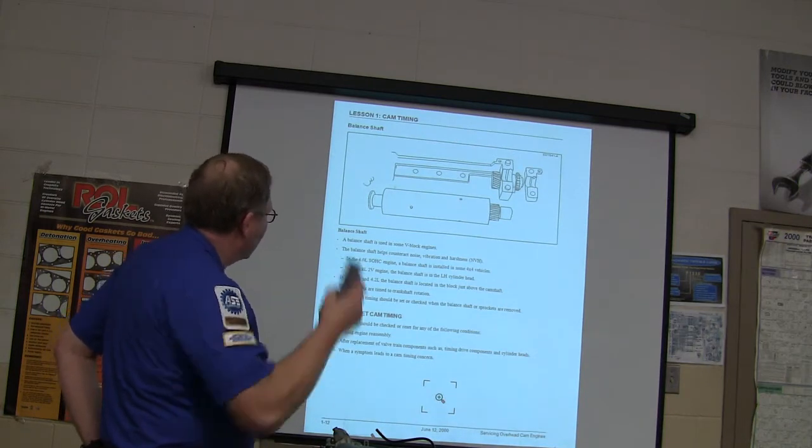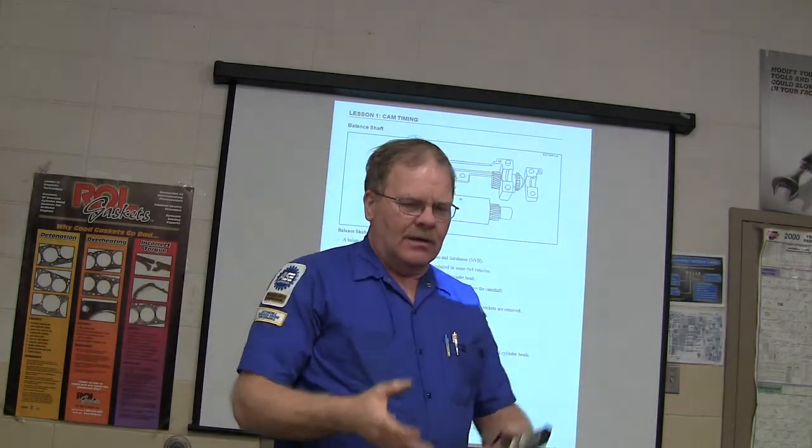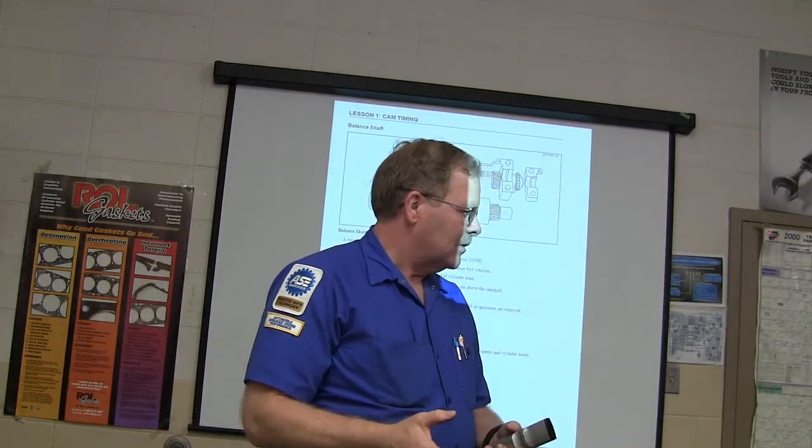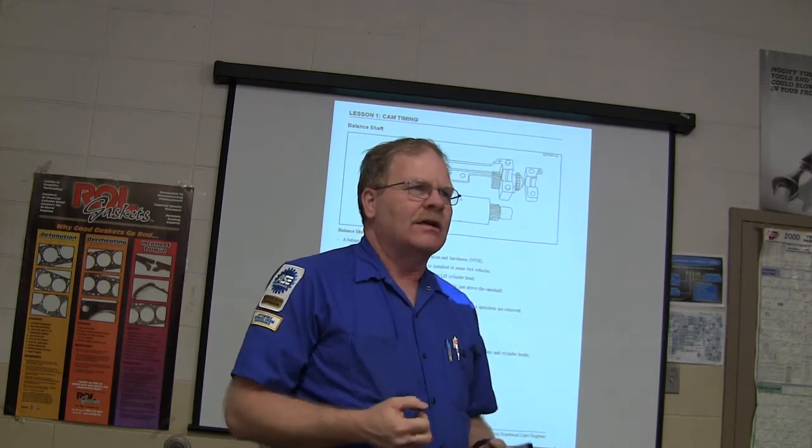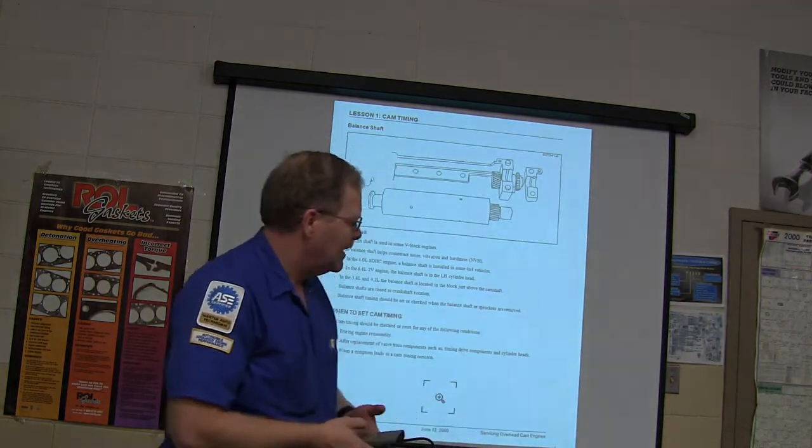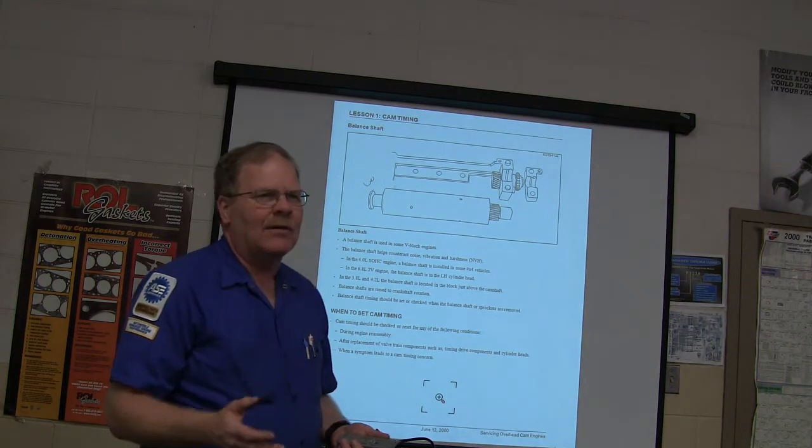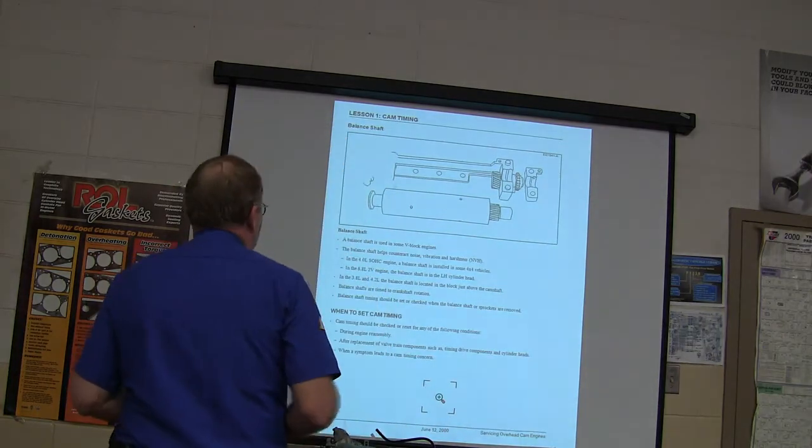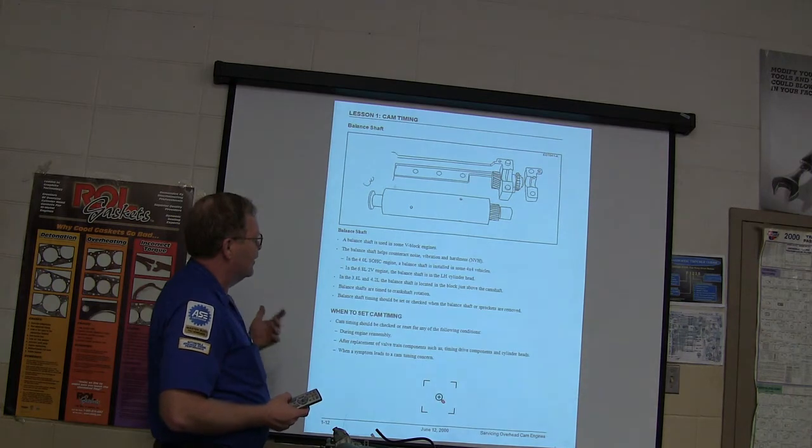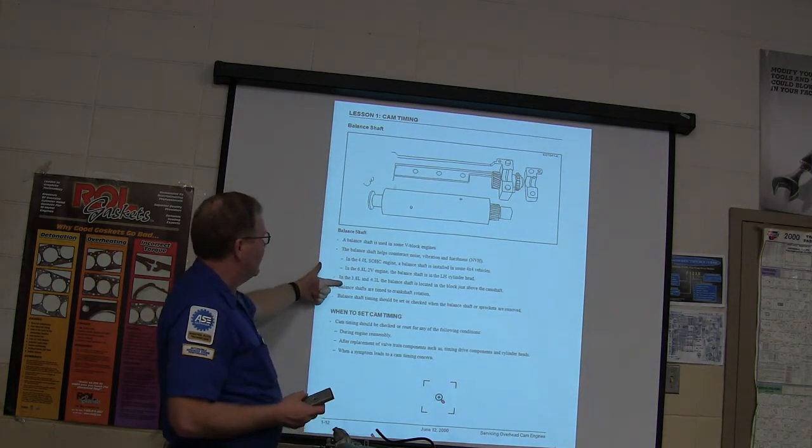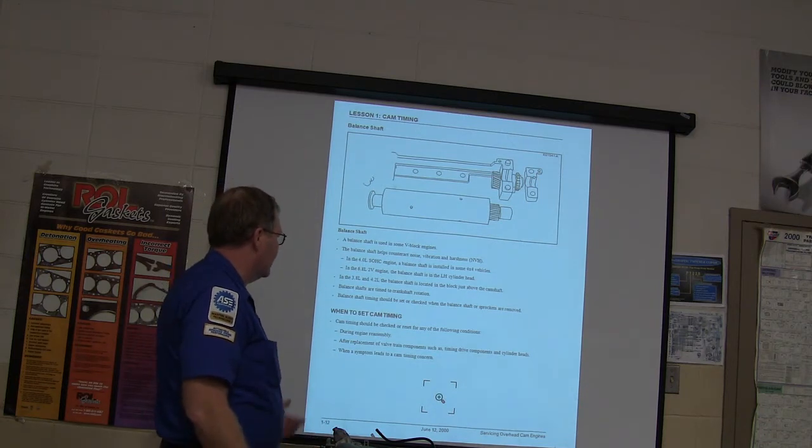Here we go. You've got a balance shaft. Some V-block engines use balance shafts. Some 4-cylinder engines use a balance shaft, and I've got one over here somewhere that actually is underneath and it contains the oil pump. And that balance shaft is to keep the engine from having the regular vibrations that engines typically have. Makes them run a lot smoother. Counteracts noise, vibration, and harshness, but it has to be timed right. If you don't time it right, it'll shake your teeth out. And the 6.8-liter V-10 2-valve engine, a balance shaft is in the left-hand cylinder head. So you've only got one in one side there. 3.8 and 4.2, it's in the block just above the camshaft. They're timed to crankshaft rotation. They need to be checked when the balance shaft or components are removed.